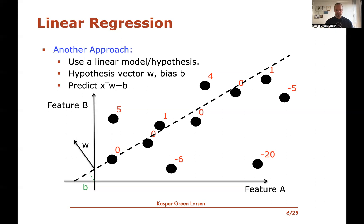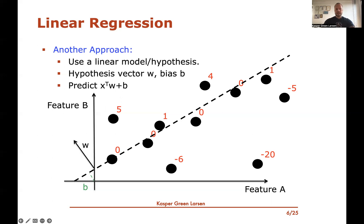This is where linear regression comes into play. With linear regression, instead of using a regression tree, we go back to using linear models as our hypotheses. We're not predicting a class, so we won't take the sign of an inner product. Instead, our hypotheses are hyperplanes specified by a vector w — the normal vector — and a bias b. For any given point x, the prediction is the inner product between x and w, plus the bias.